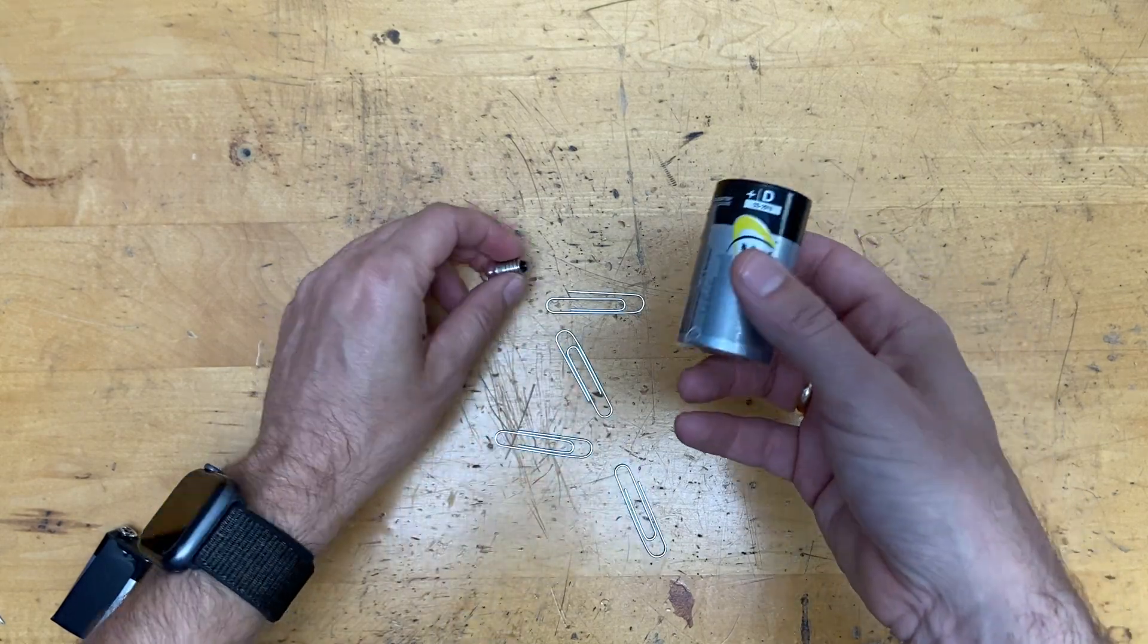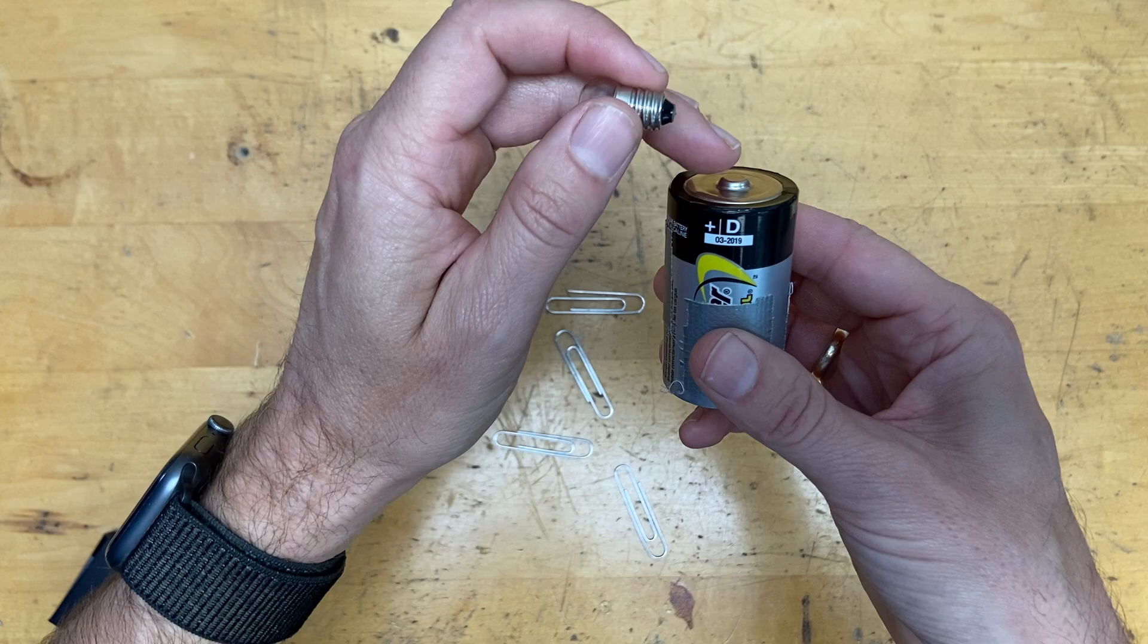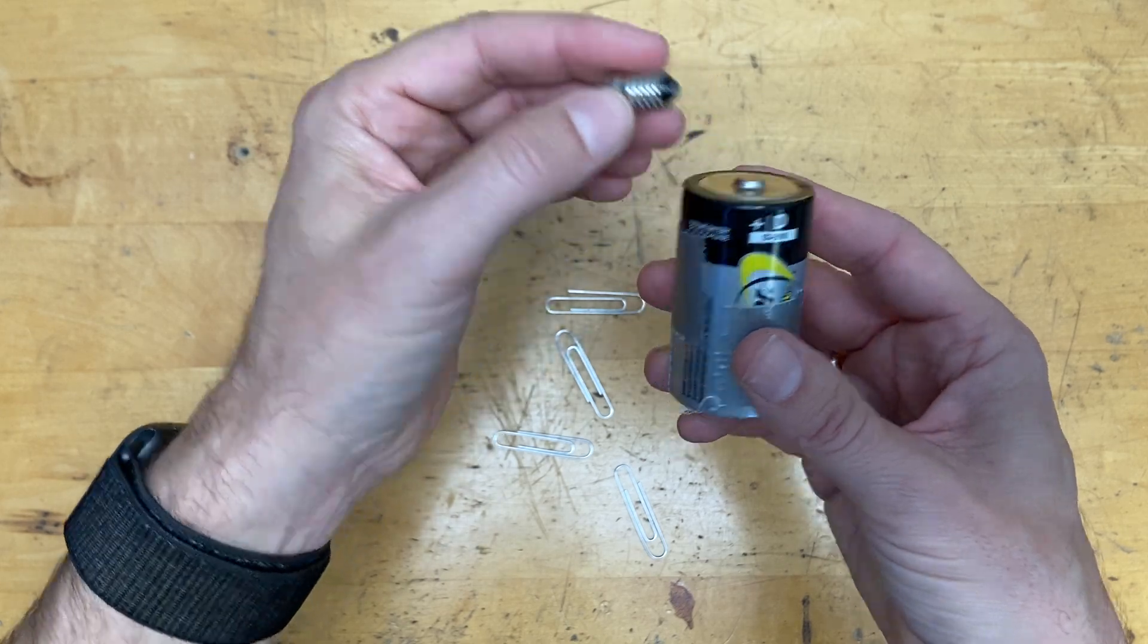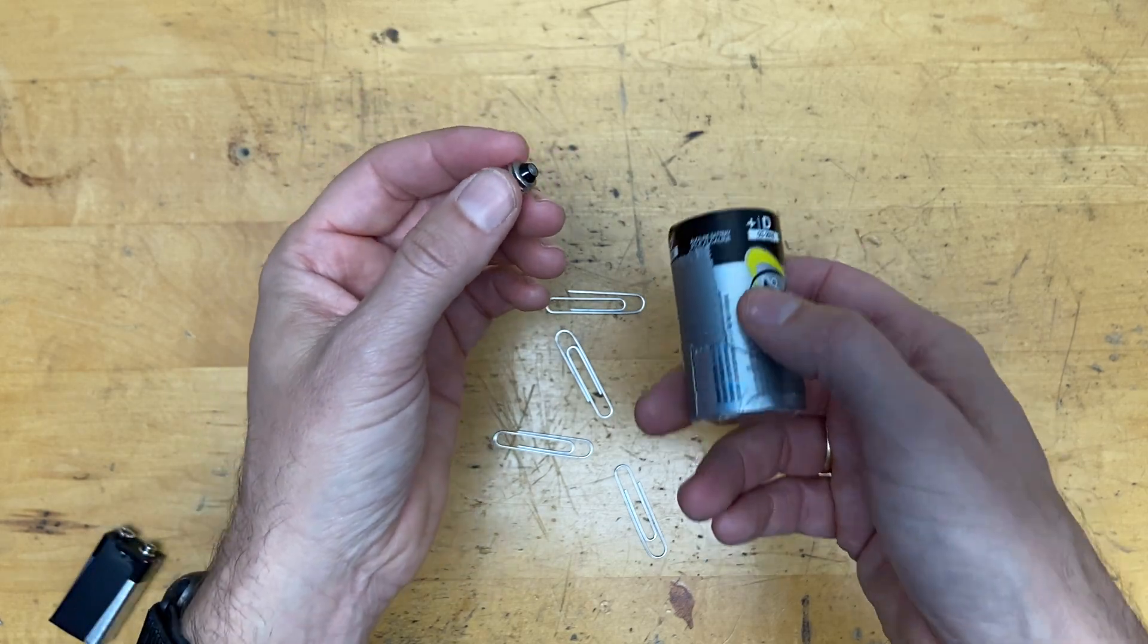So what I'm going to do is hold this, it's kind of hard to do with one hand. I'm going to take the positive end of the D cell battery. You can do this with the C cell battery, a double A, a triple A, it should all work.